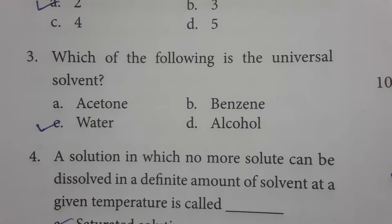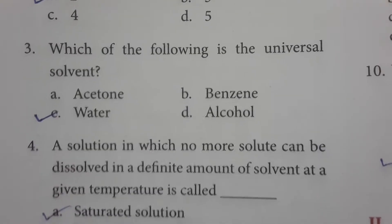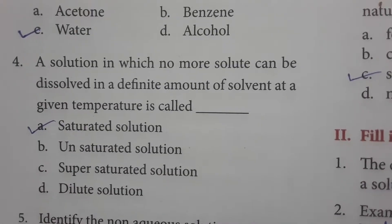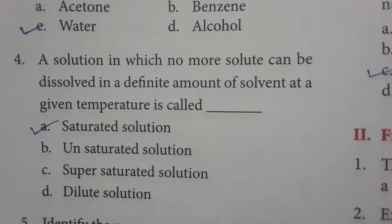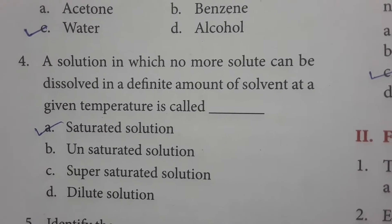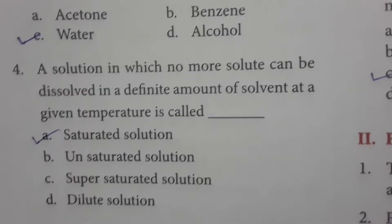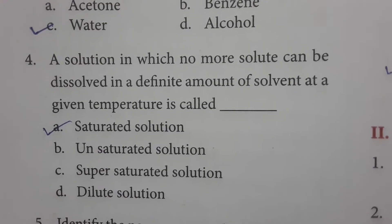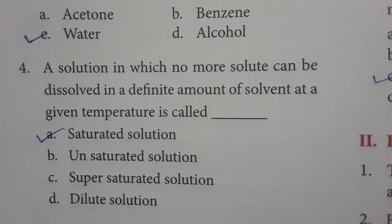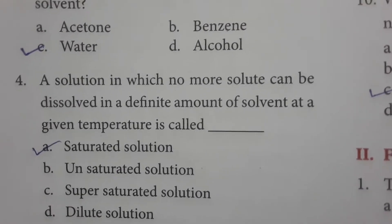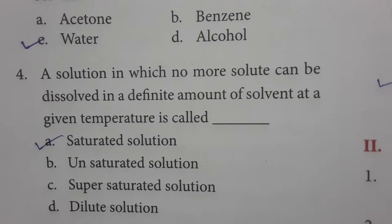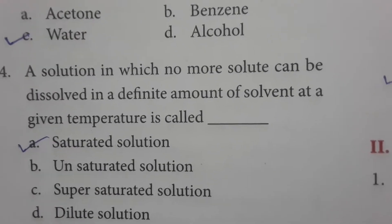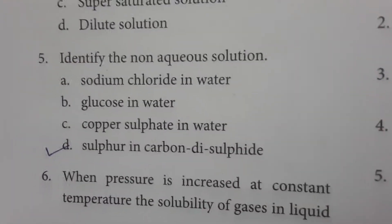Which of the following is the universal solvent? Water is the universal solvent. A solution in which no more solute can be dissolved in a definite amount of solvent at a given temperature is called a saturated solution. In a saturated solution, you can add more solute but it cannot dissolve beyond a particular level.